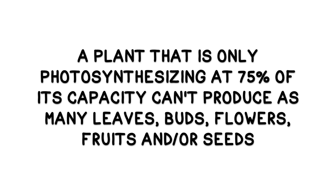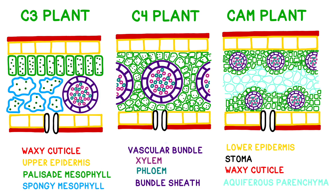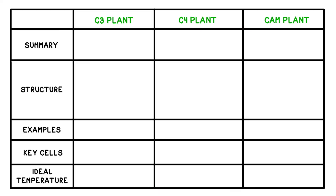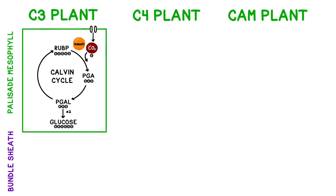Since most food crops are C3 plants, if global temperatures continue to rise, it's likely to have huge implications for food production. While some photorespiration is almost inevitable, it's in a plant's and a grower's best interest to avoid it if at all possible. If crops are only photosynthesizing at 75% capacity, they won't be able to produce nearly as many leaves, flowers, buds, fruits, or seeds. We'll now begin comparing C3 plants to C4 and CAM plants—specialists in avoiding photorespiration. We'll be keeping track of C3, C4, and CAM photosynthesis processes, leaf structure, example plants, key cells, and the ideal temperature range in a summary table.